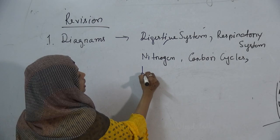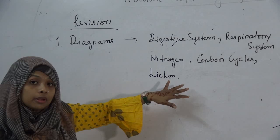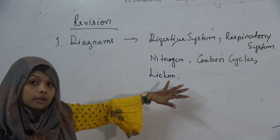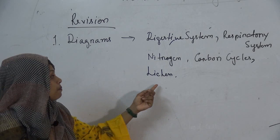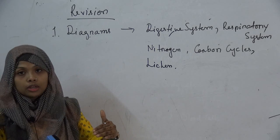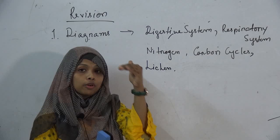The next diagram is lichen. Do we remember what a lichen is? Lichen is an association between algae and fungi. I might give you a diagram, ask you to label it, explain what is happening, and ask what type of association it is — is it symbiotic, parasitic, or saprotrophic? I might also ask what the algae is getting out of this association or what the fungi is getting. I want you to learn every step properly.